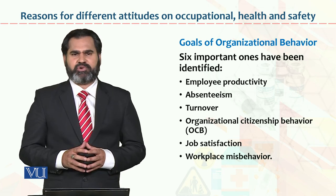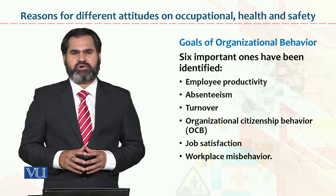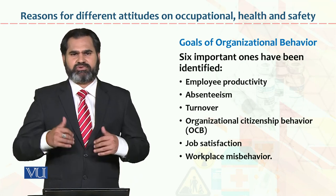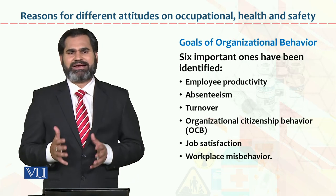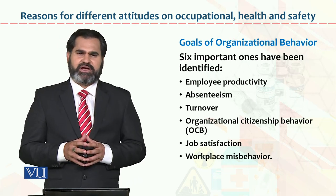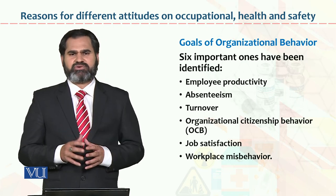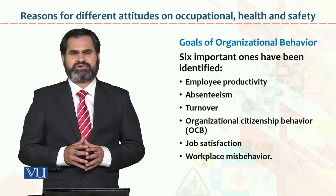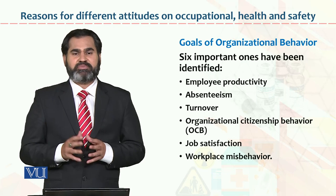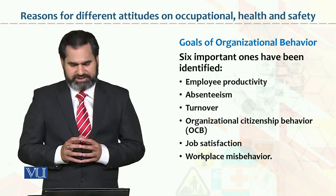جس میں پہلا ہے imply productivity. Productivity کہتے ہیں ratio between output over input. Organization produce کیا کہہ رہی ہے اور input کیا لے رہی ہے in the pharma material labor وغیرہ. اگر input کہیں پہ waste نہیں ہو رہا تو output بہتر ہوگی organization کی، تو اس کی productivity زیادہ ہوگی — اسے ہم imply productivity کہتے ہیں.